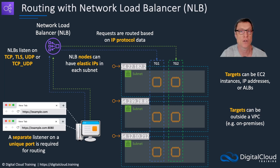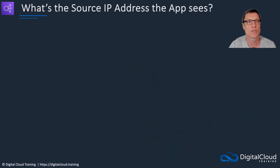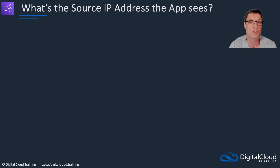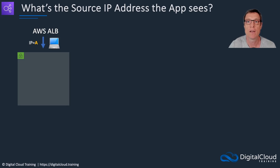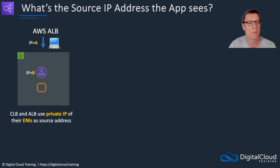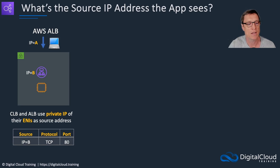Targets can also be outside of a VPC — for example, in an on-premises data center. Now, an important question: what is the source IP address that the application is going to see? This comes up as an exam question and is also important if you need to log that information or do screening for licenses or security purposes. Let's say the client's IP address on the internet is A, and the load balancer node it's forwarded through has IP address B. The CLB and the ALB use the private IP address of their ENIs as the source address — so the application will see IP equals B. The application sees the load balancer itself as the client, not the actual client's address.